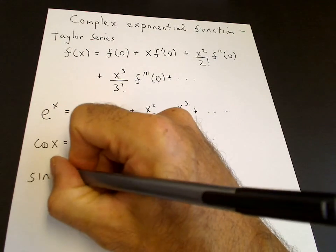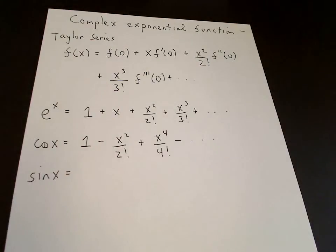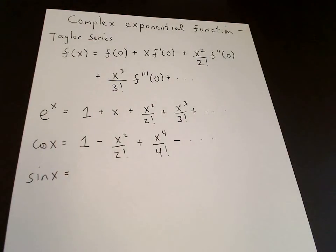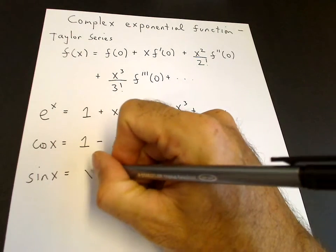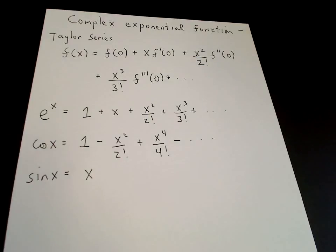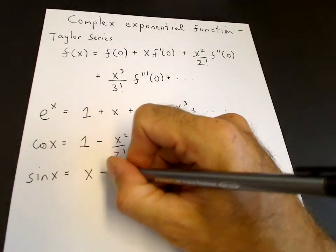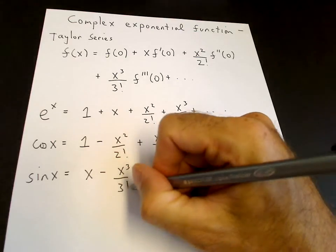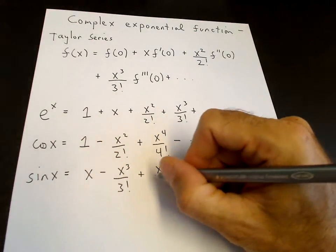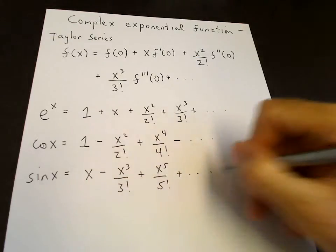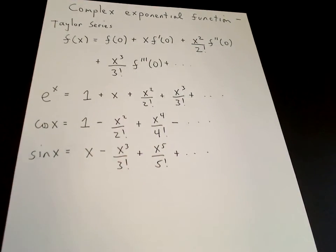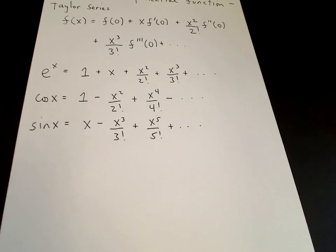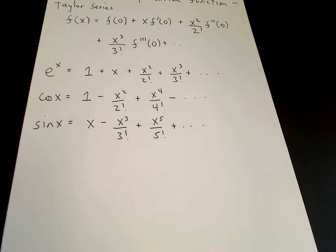Similarly, the series for sine: sine of 0 is 0, so the constant term vanishes. The derivative of sine is cosine, and cosine of 0 is 1, so the leading term is x. The even powers cancel, the next term is x cubed over 3 factorial, then x to the 5th over 5 factorial, etc. These three series — e to the x, cosine x, and sine x — all converge for all x.